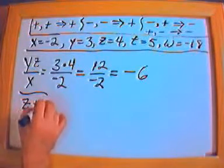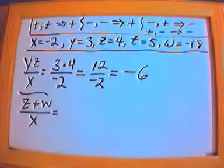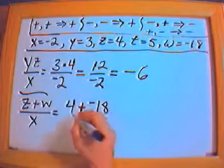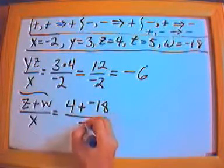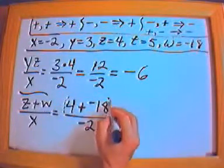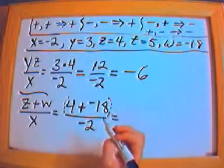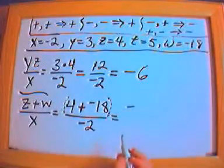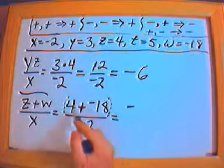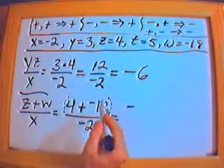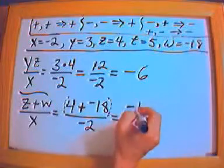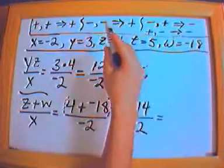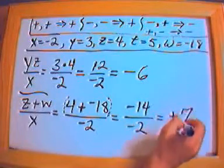Let's say we have (z plus w) over x. z is 4, w is negative 18 — so I've got 4 plus negative 18 — over x which is negative 2. We deal with the top first because there's an imaginary parenthesis around the numerator. Negative 18 has bigger absolute value than 4, so the top is negative: 18 minus 4 is 14, giving negative 14. Then negative 14 over negative 2: negative divided by negative is positive, and 14 divided by 2 is 7. The answer is positive 7.